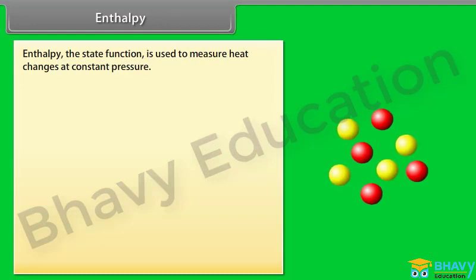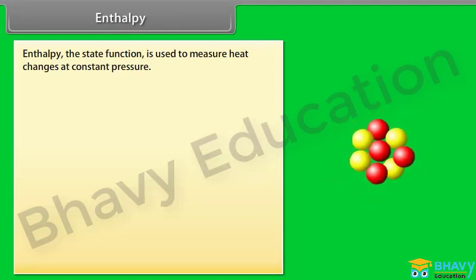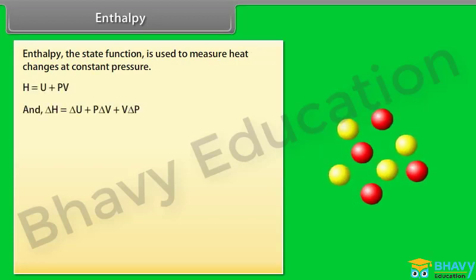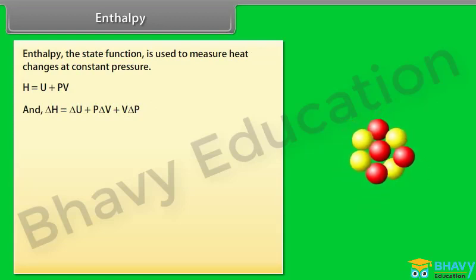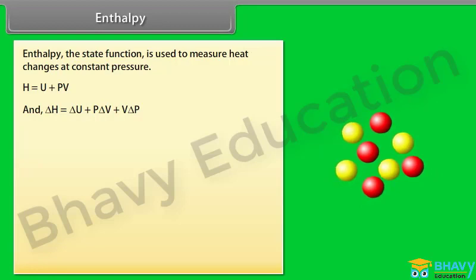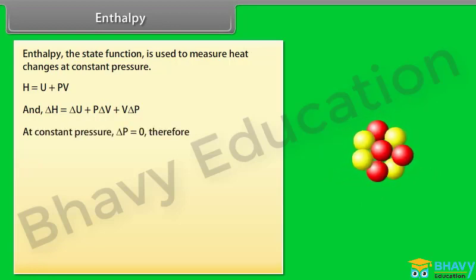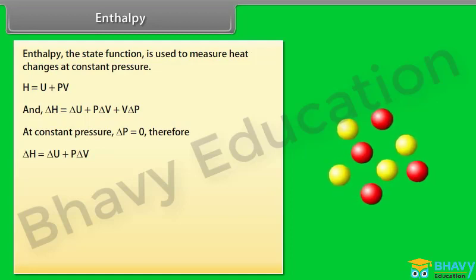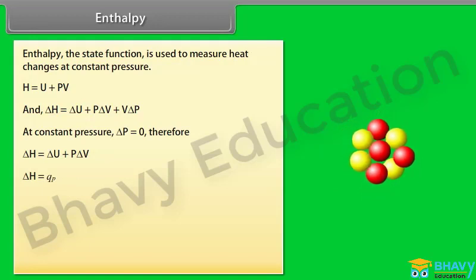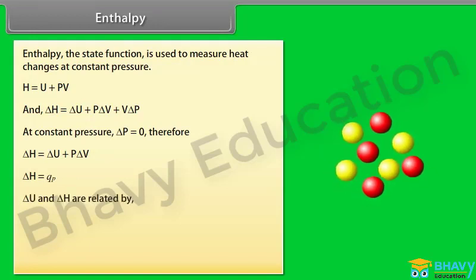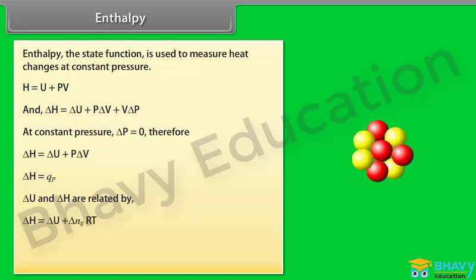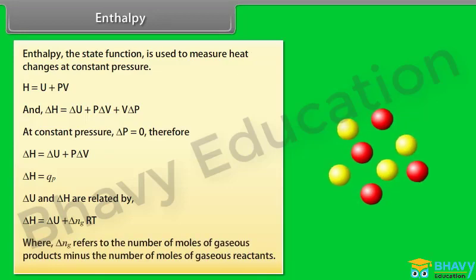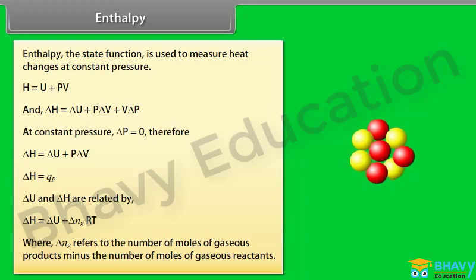Enthalpy, the state function, is used to measure heat changes at constant pressure. H = U + PV, and delta H = delta U + P·delta V + V·delta P. At constant pressure, delta P equals zero, therefore delta H = delta U + P·delta V. This equation can be written as delta H = QP. Delta U and delta H are related by delta H = delta U + delta(NG)RT, where delta NG refers to the number of moles of gaseous products minus the number of moles of gaseous reactants.